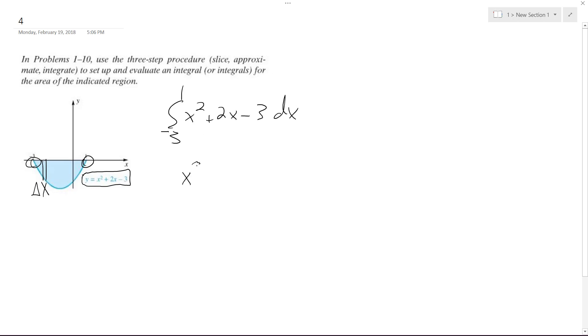So we get x cubed over 3 plus, this is x squared over 2, but it cancels out the 2 coefficients, so it just becomes x squared, and then minus 3x, and then we're going from negative 3 to 1.